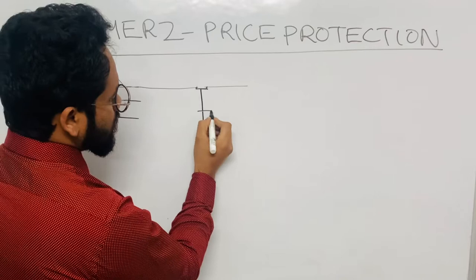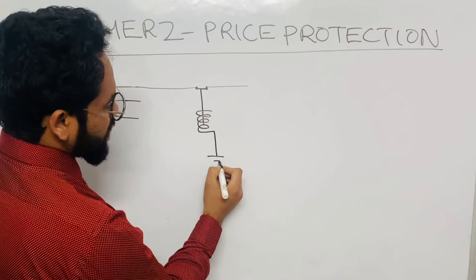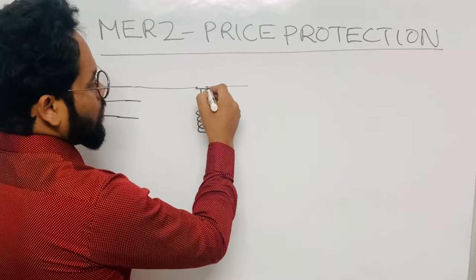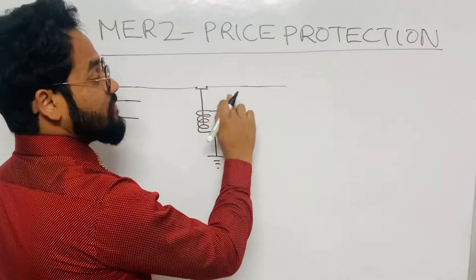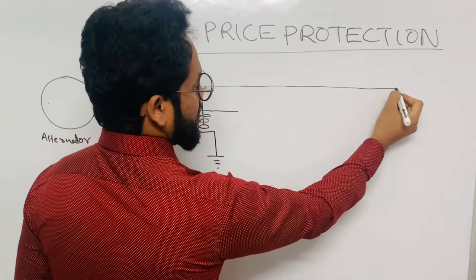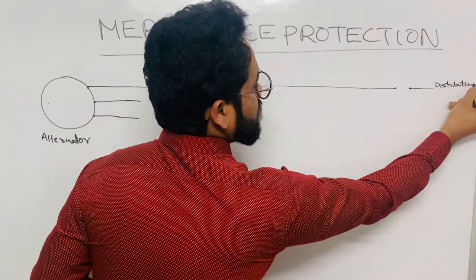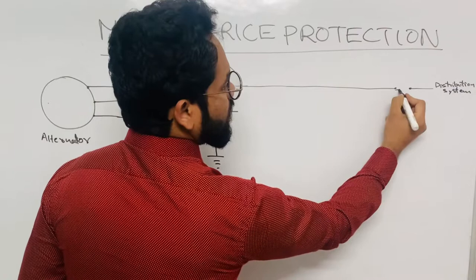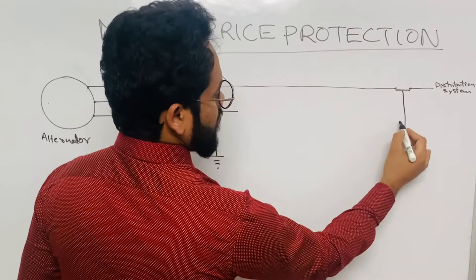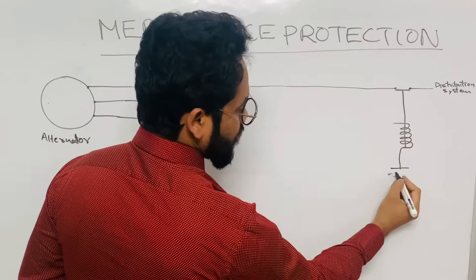Suppose I am taking this phase. In this phase, suppose this is the contact breaker, which is connected to a relay coil and connected to the ground — that is the aircraft structure. Next, this feeder line goes from here and at the other end is connected to the distribution system. At that end, we have another contact breaker, which is also connected to another relay coil, also connected to the aircraft structure ground.